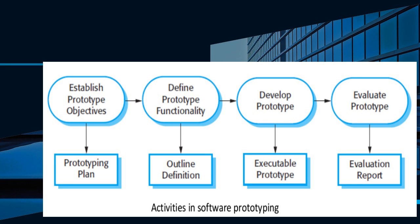Different activities are involved in software prototyping. The diagram represents the various process activities and the result of each process or activity is represented in a rectangle. The first activity is to establish prototype objectives — the objectives of the prototyping should be made explicit from the start of the process.